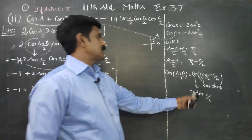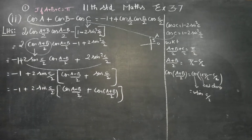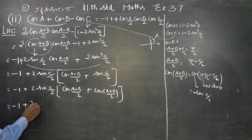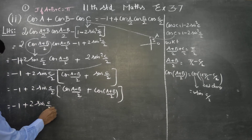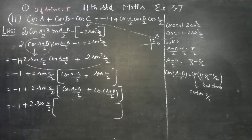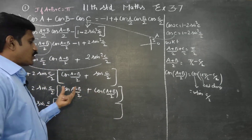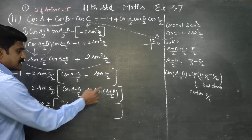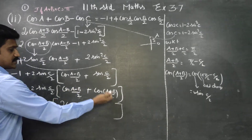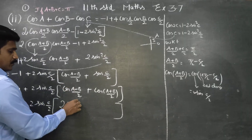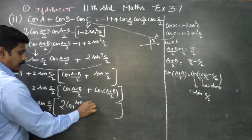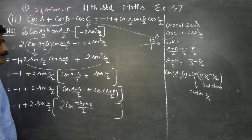Sin(C/2) would answer cos((A+B)/2). Then the final result is minus 1 plus sin(C/2) · [sin(C/2)], using cos C plus cos D = 2 cos((C+D)/2) · cos((C-D)/2).